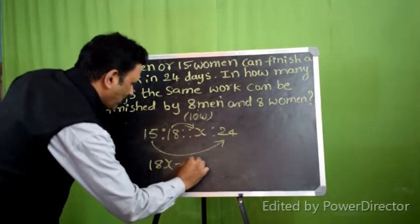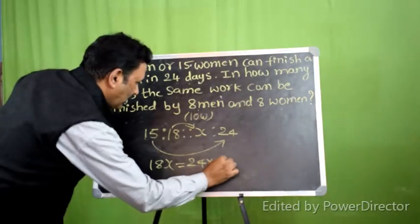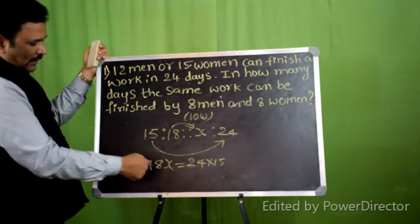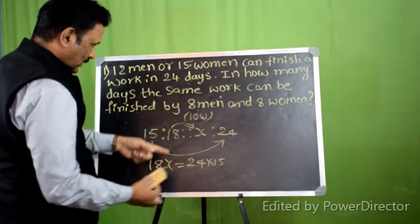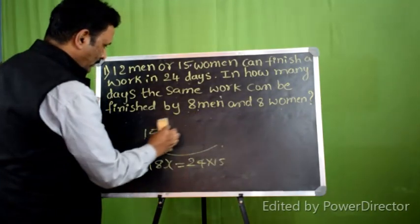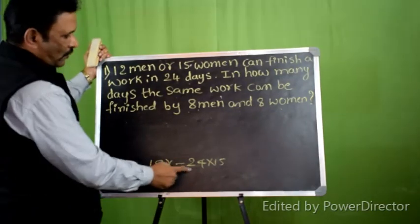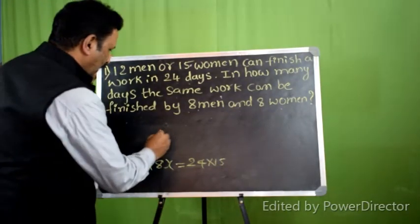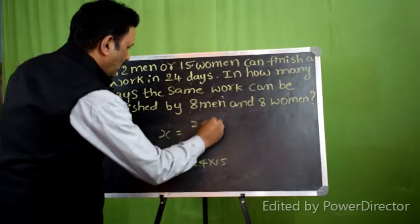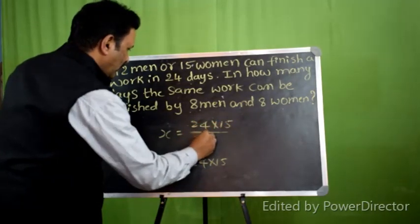Let's multiply these two. 24 into 15. So, 18x is equal to 24 into 15. x is equal to 24 into 15 divided by 18.